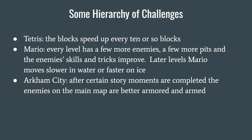Moving to Arkham City: certain story moments unlock harder enemies on the main map. The main map is open — you can go anywhere from the beginning — but when you defeat a part of the story and come back out, the enemies have gotten harder: maybe they've gotten armed or picked up armor. And often that fits into the story — Joker comes over the loudspeaker saying 'I just found a cache of guns, Batman. Well, you were fighting the Penguin and now all my guys have guns. Try to get past them now.' So as the story progressed, the enemies got harder.